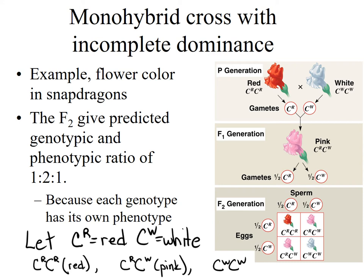Let's look at a monohybrid cross using incomplete dominance. We're going to use an example of flower color in snapdragons. We are taking a red purebred snapdragon and a white purebred snapdragon, and the F1 generation are all heterozygous. Because it is incompletely dominant, the heterozygote has an intermediate phenotype of pink. This pink snapdragon is then crossed to form the F2 generation, and the heterozygote can either have the red allele or the white allele in the pollen, and either the red or white allele in the eggs. The Punnett square indicates all the ways that the pollen and eggs can come together. With complete dominance, you would get a 3 to 1 ratio for phenotype.